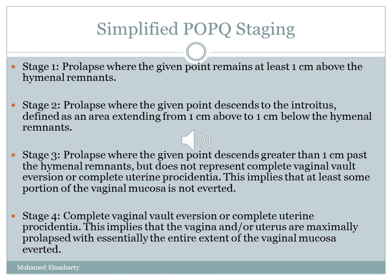Based on the grid system we go for staging. Stage 0 is the normal position of each respective site. Stage 1 prolapse: the given point remains at least one centimeter above the hymenal remnant, i.e., minus one or less. Stage 2 prolapse: the given point descends to the introitus, defined as the area from one centimeter above to one centimeter below the hymenal remnant, between minus one and plus one. Stage 3 prolapse: the given point descends greater than one centimeter past the hymenal remnant but does not represent complete vaginal vault eversion or complete uterine procidentia, roughly plus one to total vaginal length minus two centimeters. Stage 4 is complete vaginal vault eversion or complete uterine procidentia.